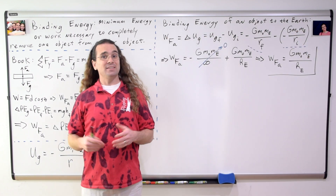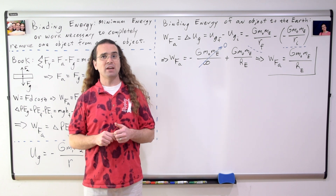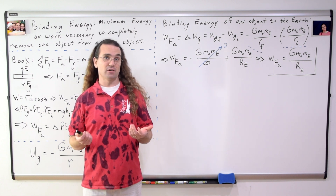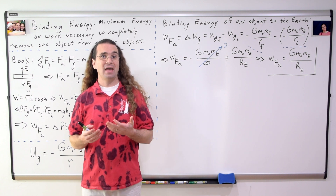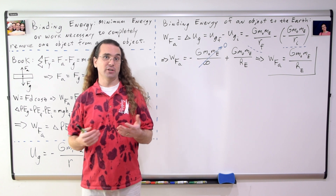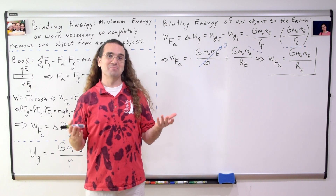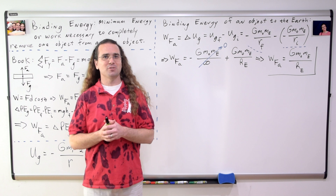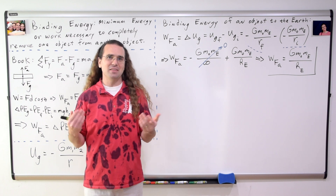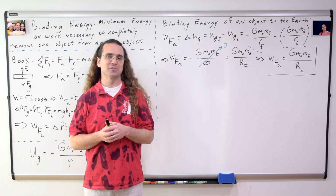That is the amount of energy required to completely remove an object from the surface of planet Earth, or the binding energy between the Earth and the object. We do not have a numbers dependency, so we'll just leave it right here with variables as our answer.